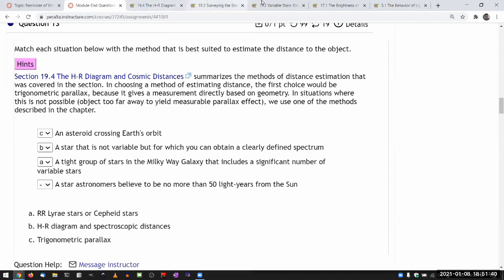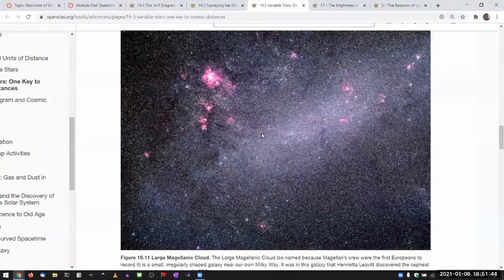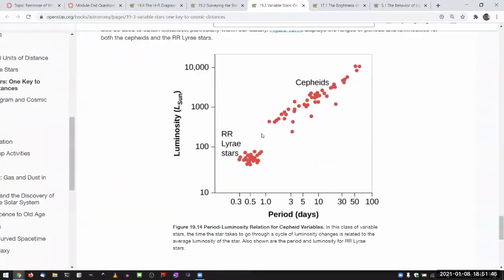Section 19.3 gives you this chart here that tells you how you can figure out the luminosity based on the period, and these are the two groups. And once you know the luminosity and their brightness, then that's enough information to figure out the distance.